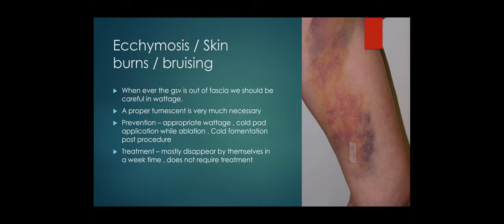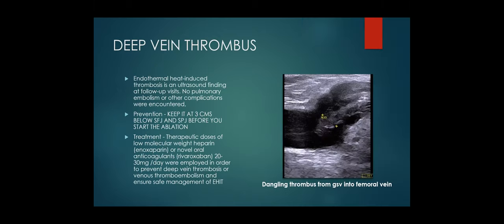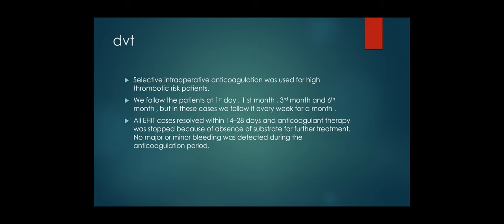Deep vein thrombosis is one of the major complications to discuss. Endothermal heat-induced thrombosis is very much possible and we see it on follow-up ultrasound. Ultrasound follow-ups are very important: first day, first month, third month, and sixth month. In patients where we see a dangling thrombus from GSV into the main femoral vein, we follow up regularly every three to five days so we don't lose track of the thrombus. We treat these patients with low molecular weight heparin and NOACs — rivaroxaban 20 to 30 mg per day for a month — to prevent the thrombus from extending into a DVT. We follow them every week to ensure there is no progression of the thrombus.